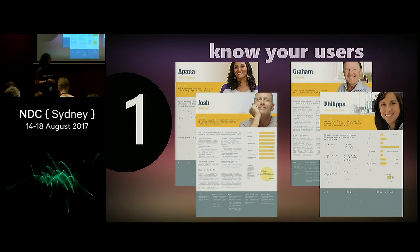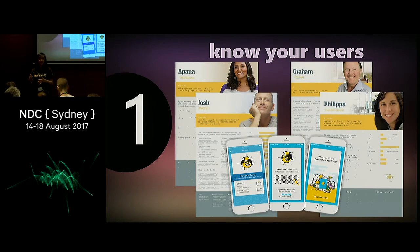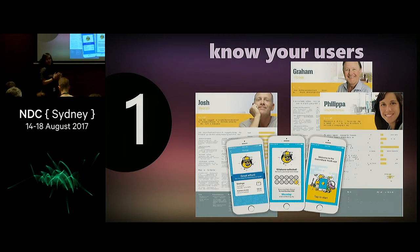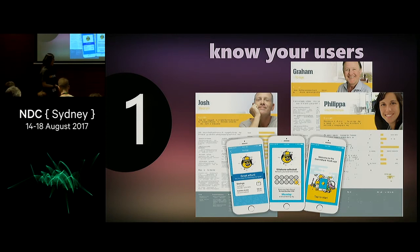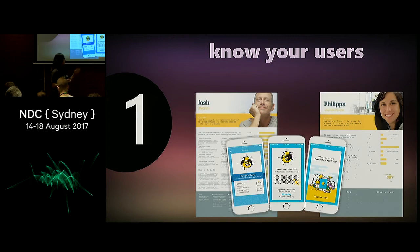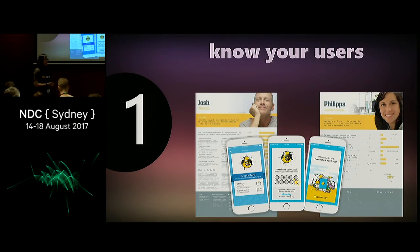Say we wanted to build an app that helps parents teach their kids about money. Apana is a university student with no kids, so she's out for this one. Josh is a father of three young children, so we'll keep him. Graham is a father of two, but his kids are no longer kids — they're adults — so he's out. Philippa is a single mother of a 12-year-old, so she's in. If we narrow it down to Josh and Philippa for this CommBank Youth application, then our whole team gets to know them.